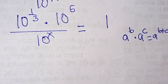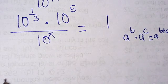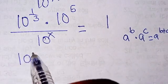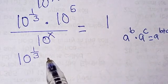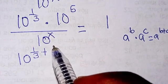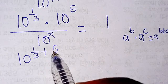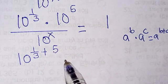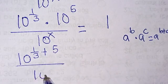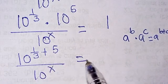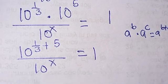That says we have a to the power b divided by a to the power c, so this is going to be a to the power b plus c. So 10 to power 1 over 3 plus 5 whole number, don't forget that is 5 whole number, divided by 10 to power x equals 1.